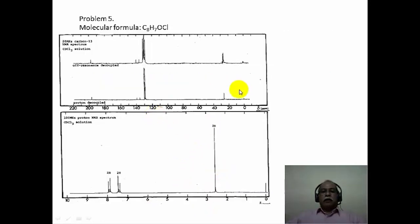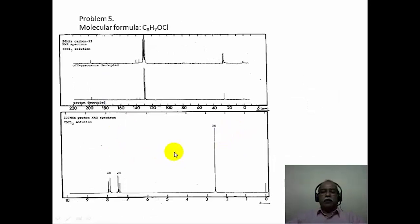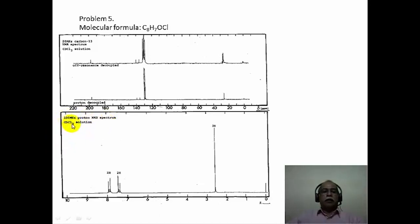Now, this is another way of looking at the spectrum. Whenever a researcher is doing research, he is not going to get the spectral data in numerical form — he is going to get a spectrum from the NMR spectrometer and needs to extract coupling constants and chemical shift values from the spectral data. Looking at this spectrum in the aromatic region between 7 and 8 ppm, this is a 100 MHz proton NMR spectrum recorded in deuterated chloroform solution.